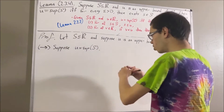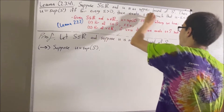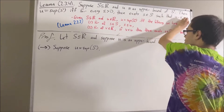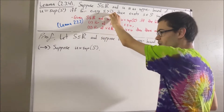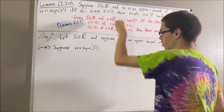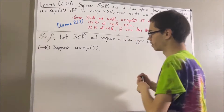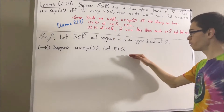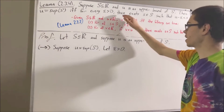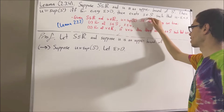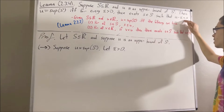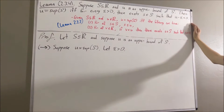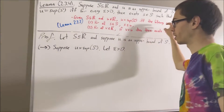Our goal is to prove the epsilon statement. Since we're trying to prove a statement about all positive real numbers, give me an arbitrary positive real number — I'll call it epsilon. Our goal from here is to prove that there exists an element s in S such that u minus epsilon is less than s. To do so, we're going to apply lemma 2.3.3.